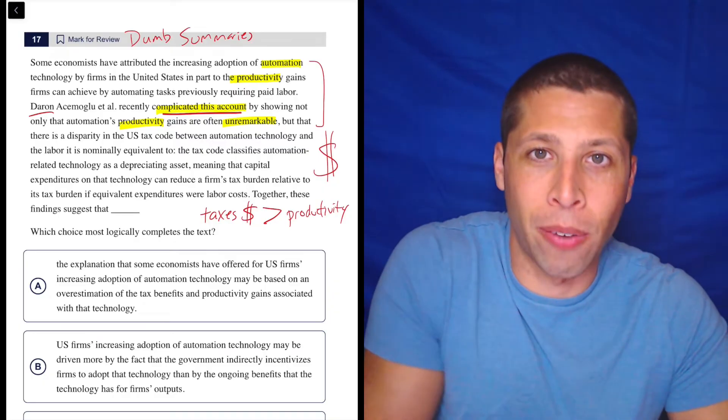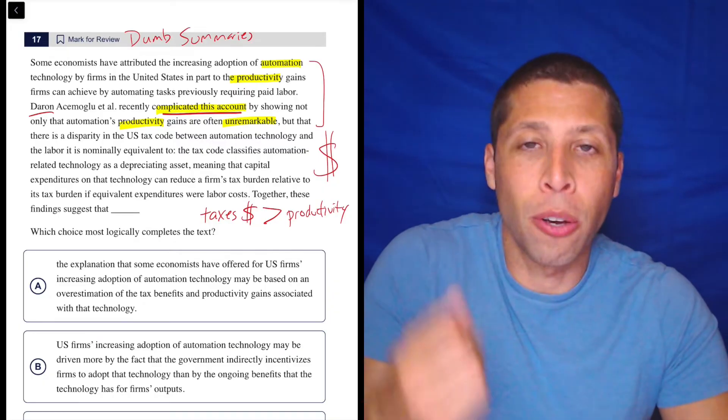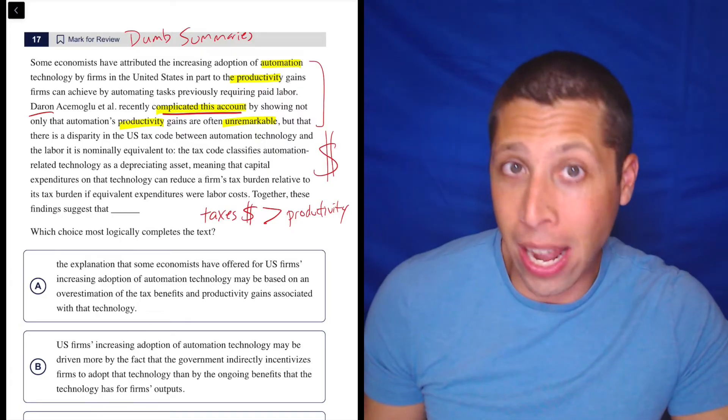Look at how many words they use to describe it. Plus, we've already said that if productivity isn't really what this is about, kind of just follow the logic right there, it must be about something else. So the tax money thing is what it is. Let's see if that helps us with the choices.